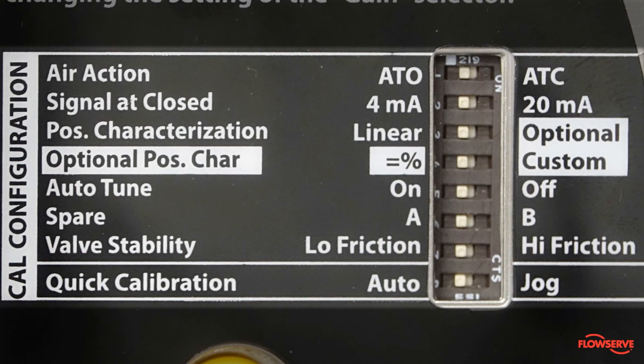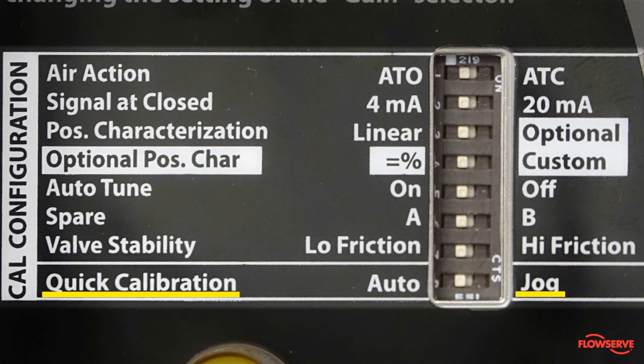The eighth dip switch is the quick calibration enable switch. Auto is the standard setting and will enable normal quick calibration. Jog is a manual setting used to set the open position for valves that overstroke.